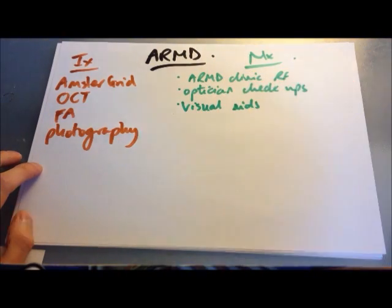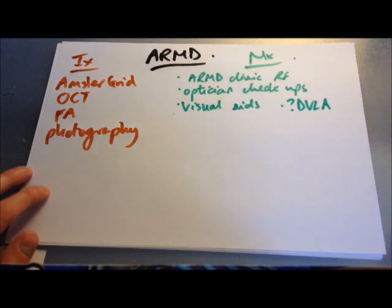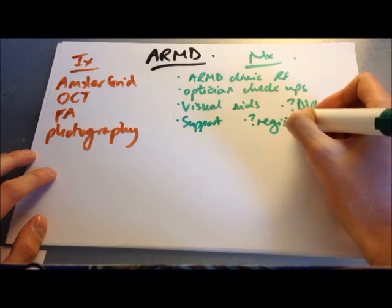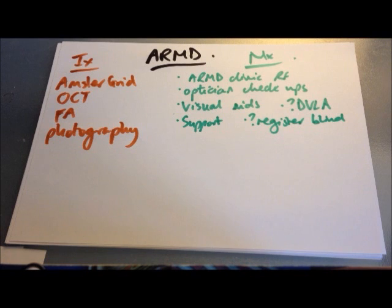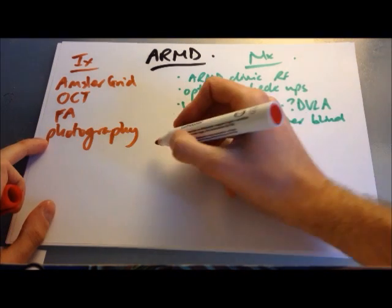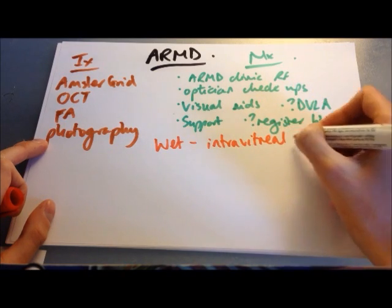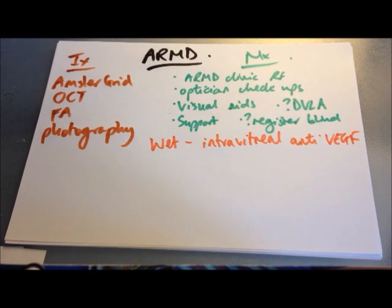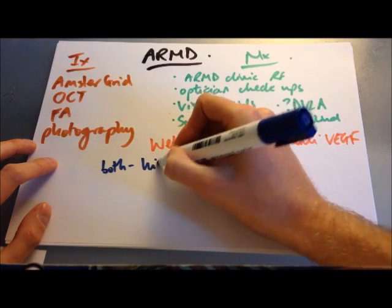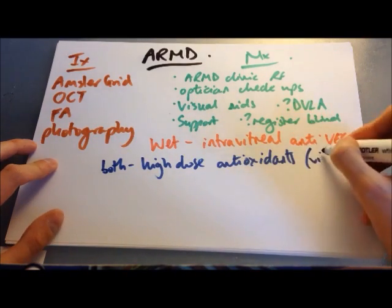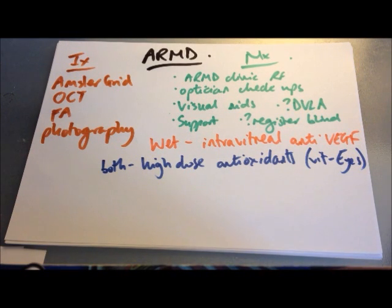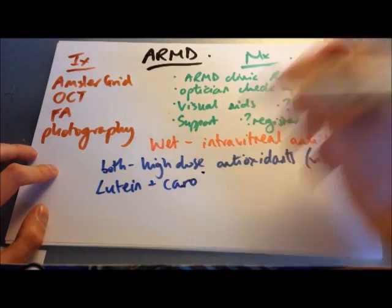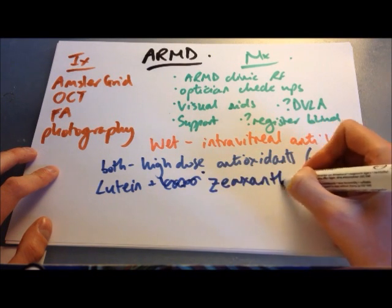Management of macular degeneration is quite limited. You can refer to a macular degeneration clinic, recommend regular optician visits to ensure the best glasses prescription, offer visual aids such as magnifiers and large print books, consider their ability to drive, recommend support groups, and consider registering them as blind or partially sighted, which requires an ophthalmologist. For wet AMD, anti-VEGF injections such as Lucentis can be injected into the vitreous humour. For both types, high-dose antioxidants such as AREDS2 have been found beneficial in preventing progression to advanced disease in around a quarter of patients.